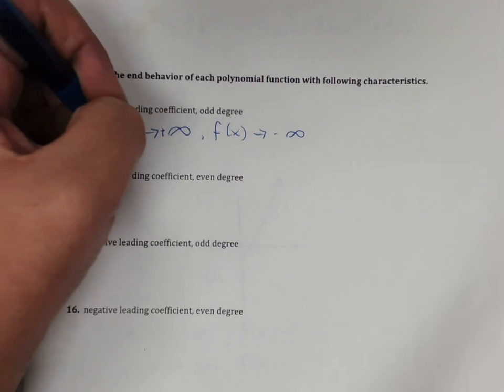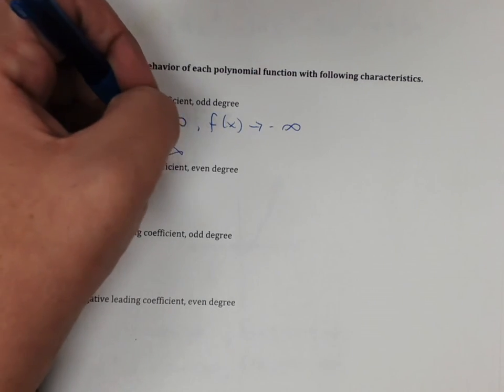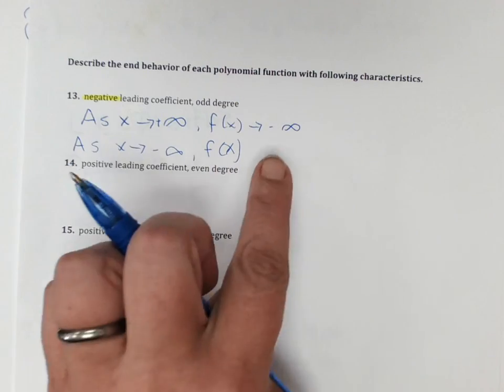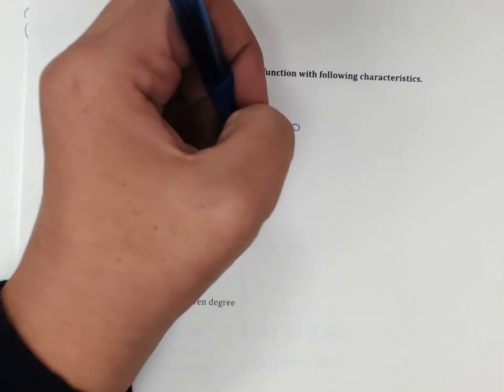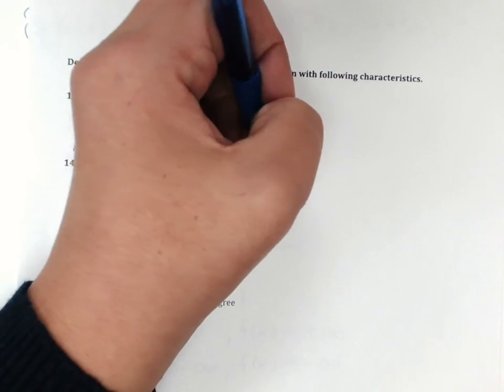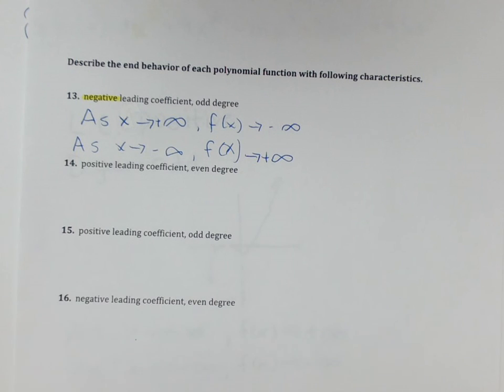So when x is approaching negative infinity, then, well, if on the first side it approaches negative infinity here, this one must approach positive infinity. If you guys have any more questions, please feel free to contact me and have a great day.